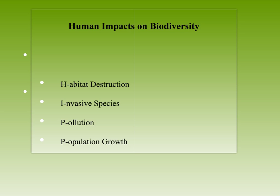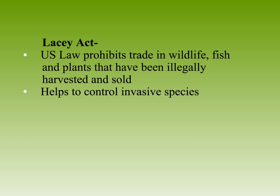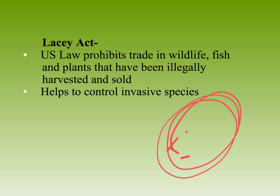Habitat destruction: when we remove trees, mess with dams, and lose grasslands and marshes and coastal lands, it ends up disrupting gene flow. If all these habitats are fragmented or you have ecotones all over the place, it's going to mess with species' ability to survive and reproduce.